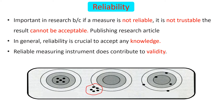Using a reliable instrument is particularly very important in research because if a measure is not reliable, it is not trustworthy and the findings of the research cannot be acceptable. One of the criteria to publish a research article in a journal is to use a reliable instrument.